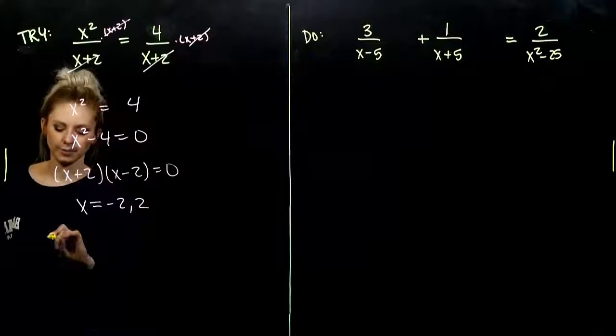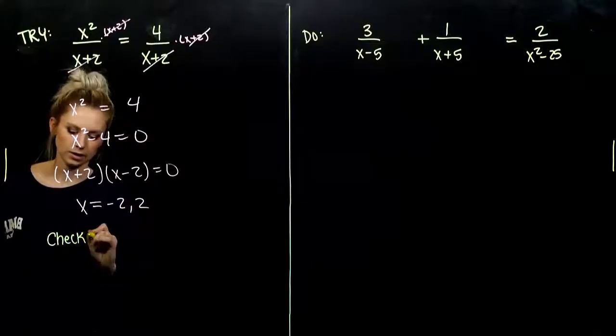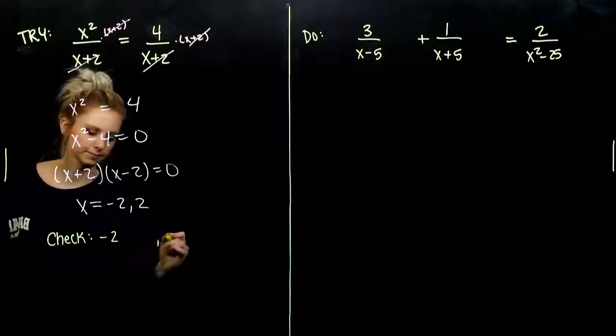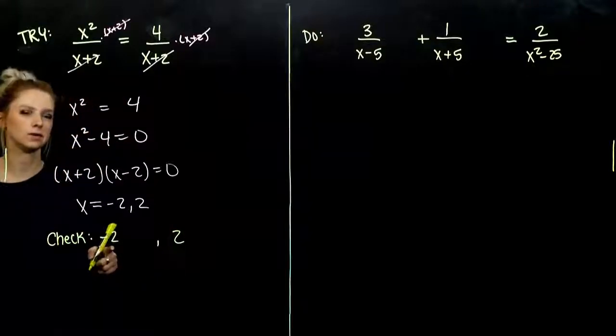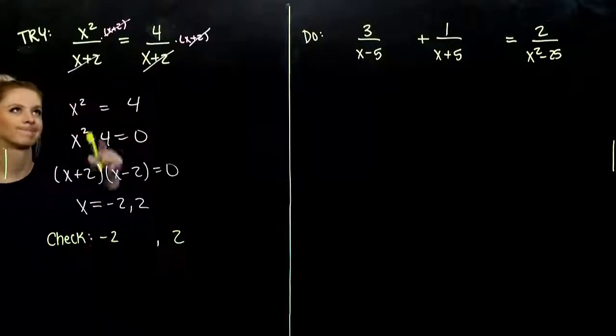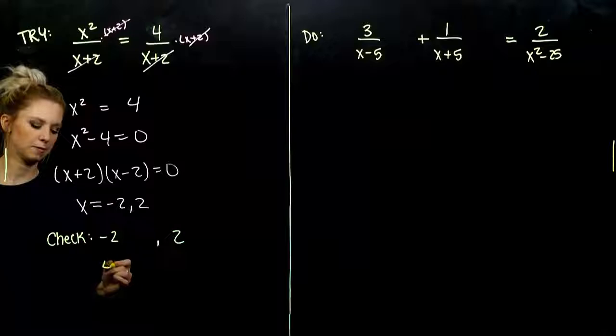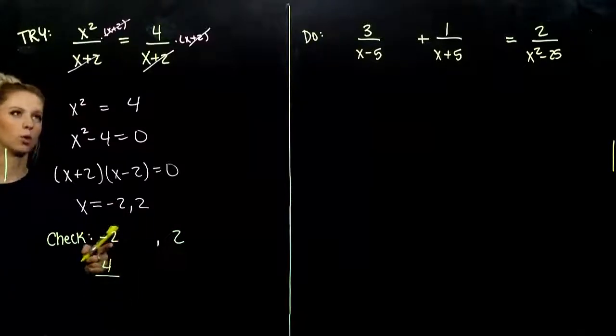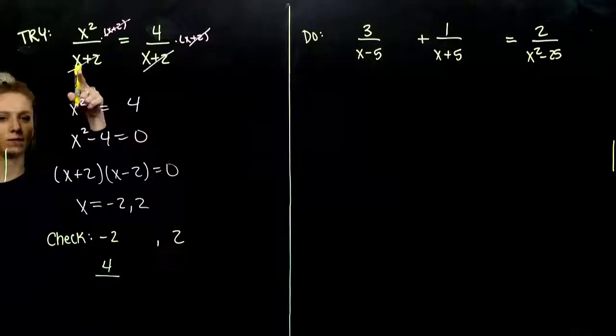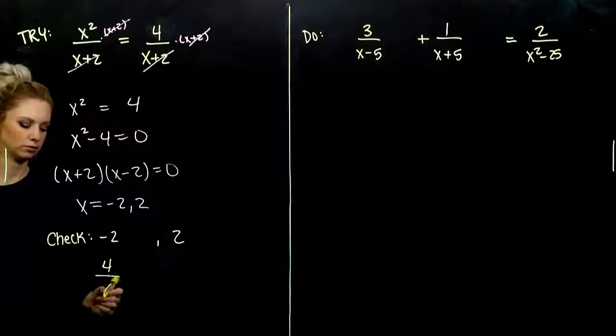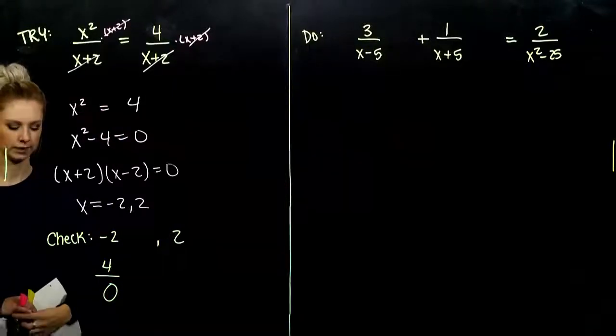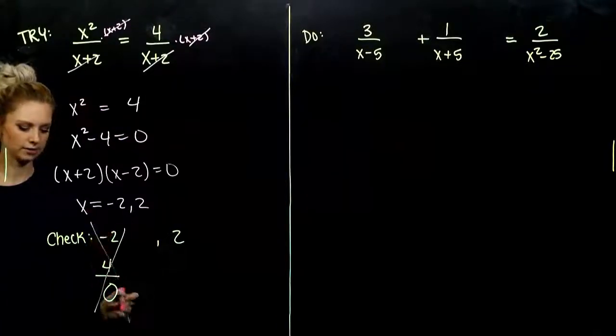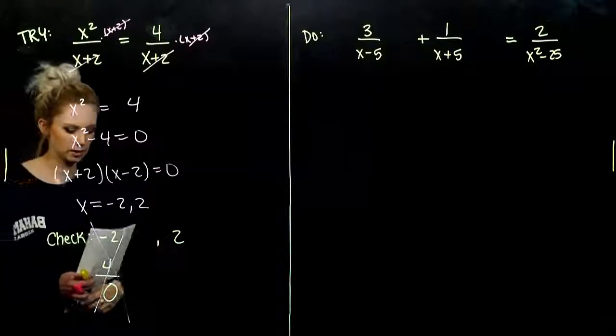But when we go to check, what did you notice about these? When I plug in negative 2, does it cause any issues? So, negative 2 squared will give me 4. But down below, what happens? Negative 2 plus 2, 0. So, that one makes our fractions undefined. Can't use that one.